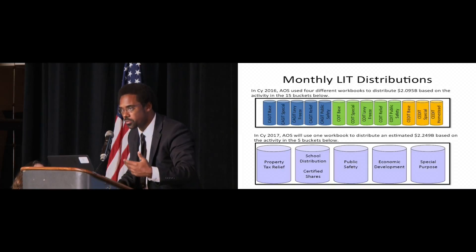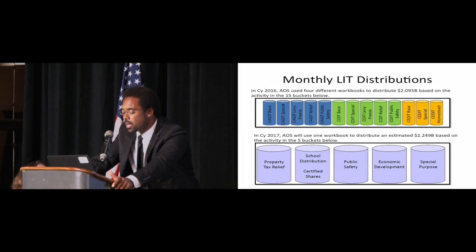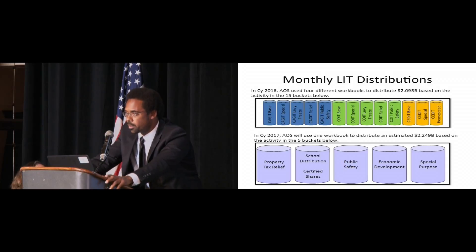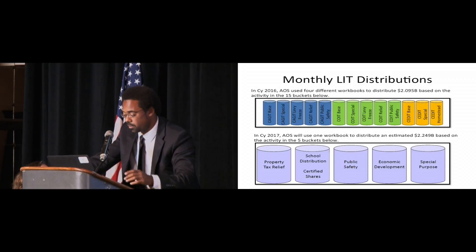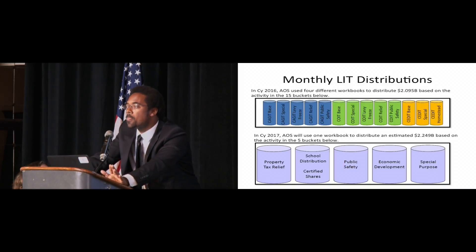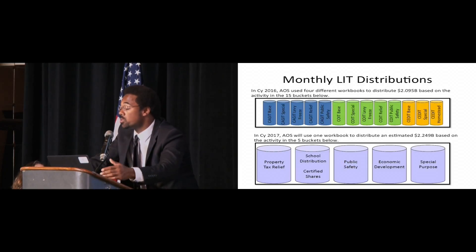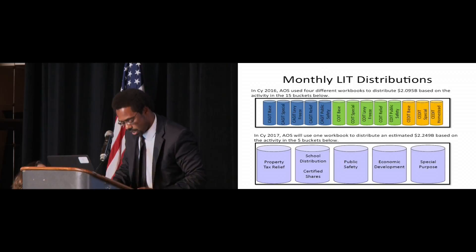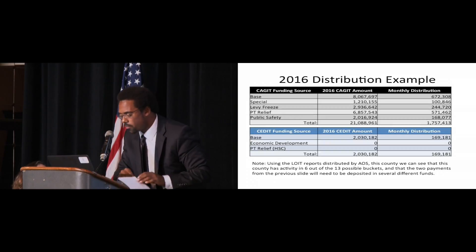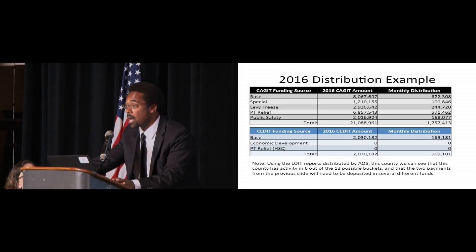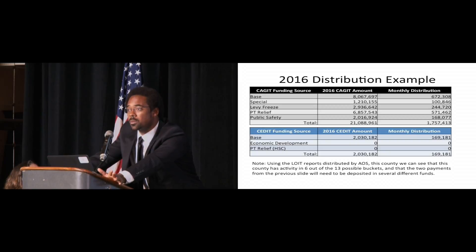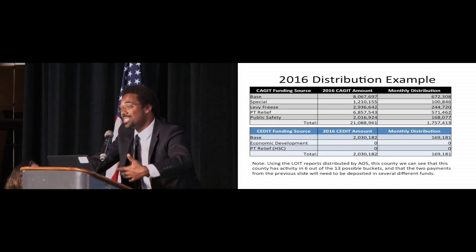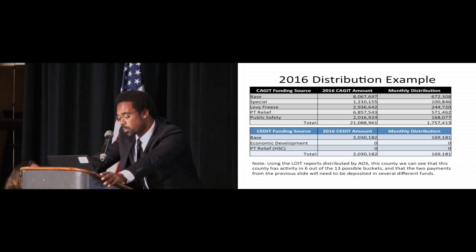This first part of the presentation is really designed for everyone. The top row shows how it used to be configured; the bottom row shows how it will be configured. What we see here is that there's no change in the amount of money you're receiving — just a change from a distribution standpoint, philosophically, in how we interact with that information. From the 13 possible buckets on the previous slide, a sample county might be using six of those — the first five associated with the CAJET and one of the three associated with the CAJET.